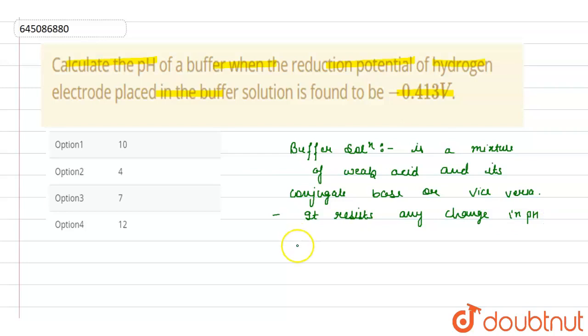So here we have to find out the value of the pH. The formula for this is E cell is equals to E naught cell minus 0.0591 upon n log of...